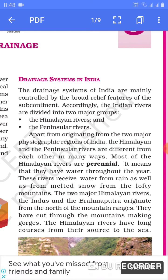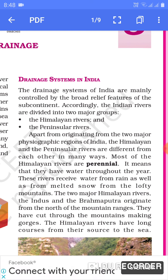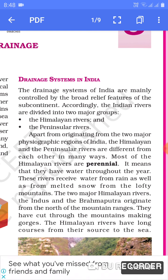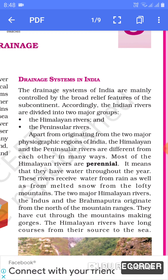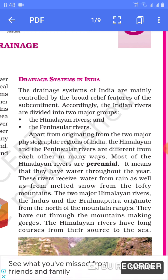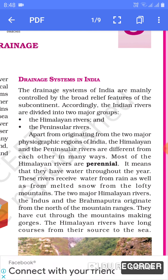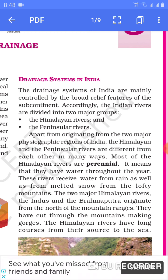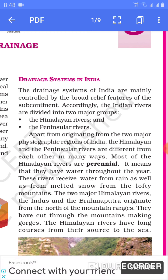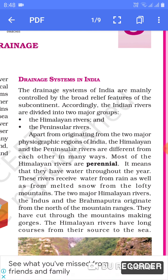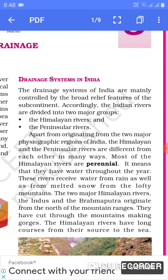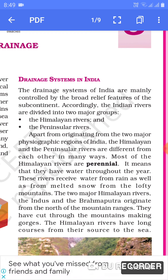Ek bharat mein jo nadiyan nikal rahi hai, pehli wo mani jaengi jo Himalayan shetra se nikalti hai — unhe hum Himalayan nadiyan kahenge. Doosri jo pathari shetra, Deccan plateau se nikalti hai, unhe hum Peninsular rivers kahenge. Apart from originating from two major physiographic regions, the Himalayan and the Peninsular rivers are different from each other in many ways.